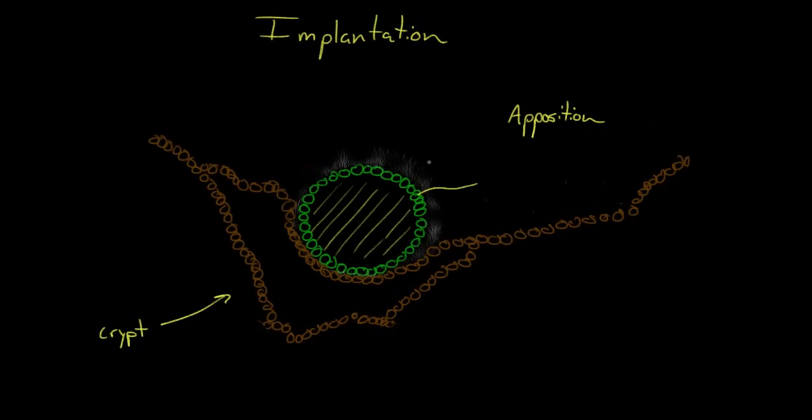This outer cell layer that we've mentioned before, these are called trophoblasts, and they start to multiply. In fact, they don't only multiply, but they start invading in. You can see them here invading into the endometrial tissue. This gets you good and stuck, and this is called adhesion.